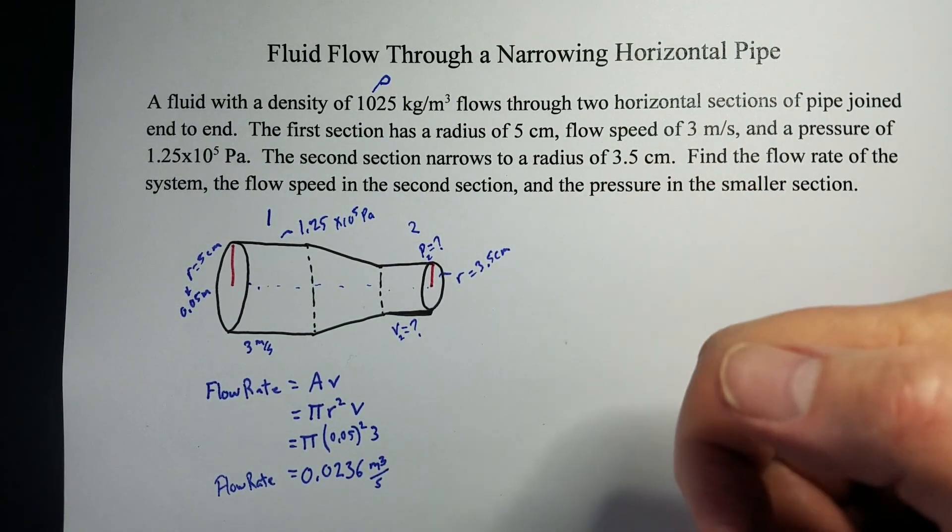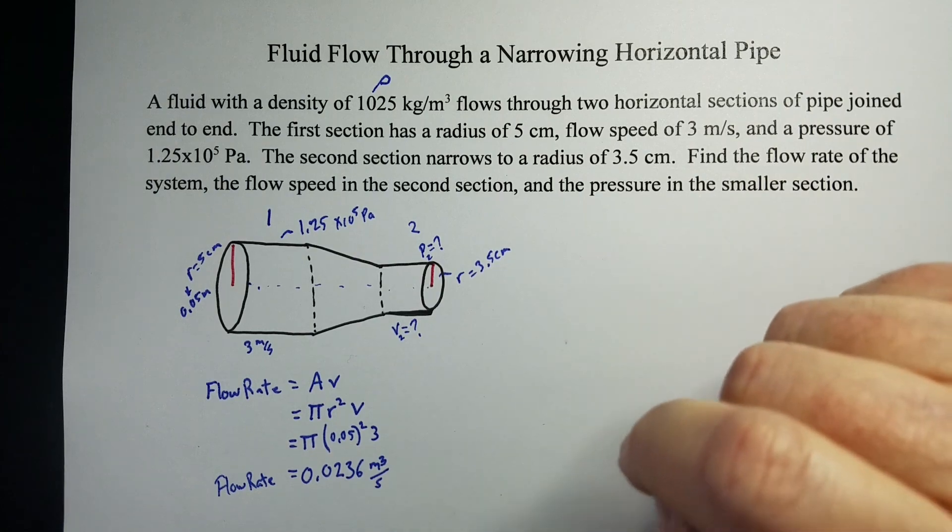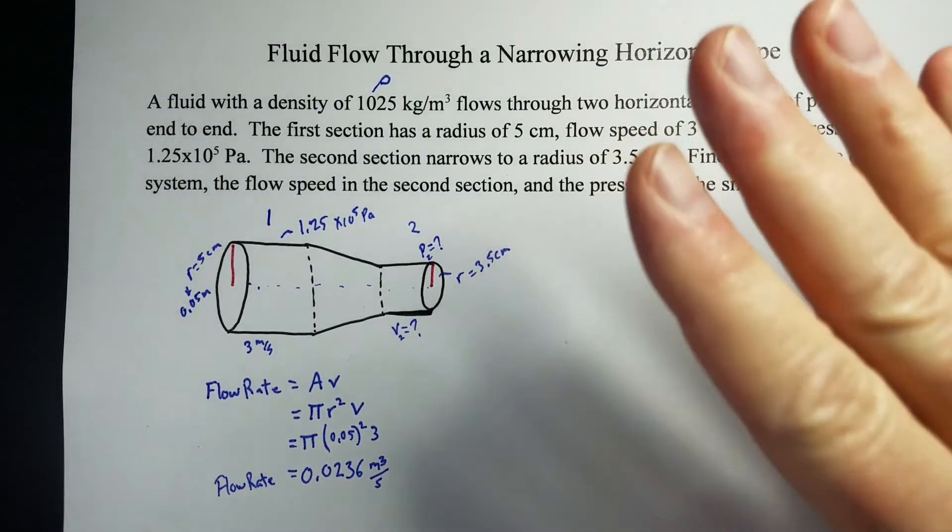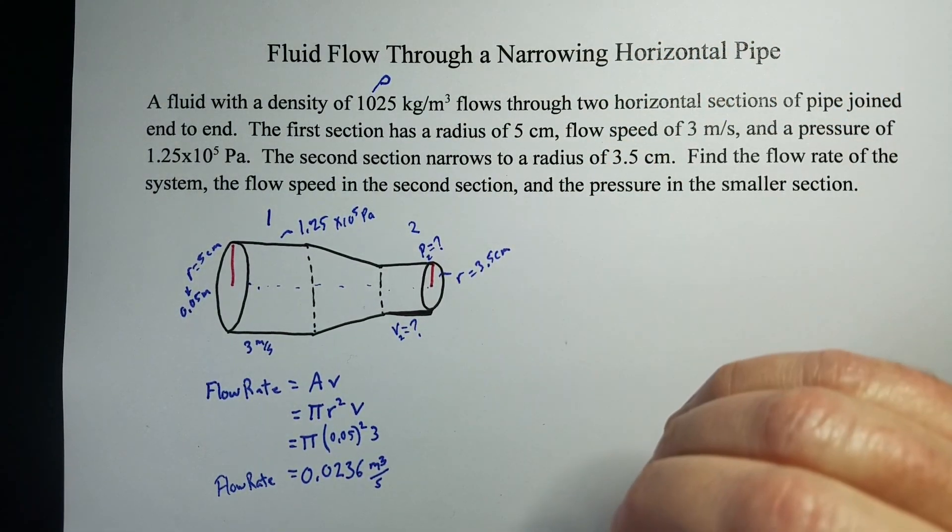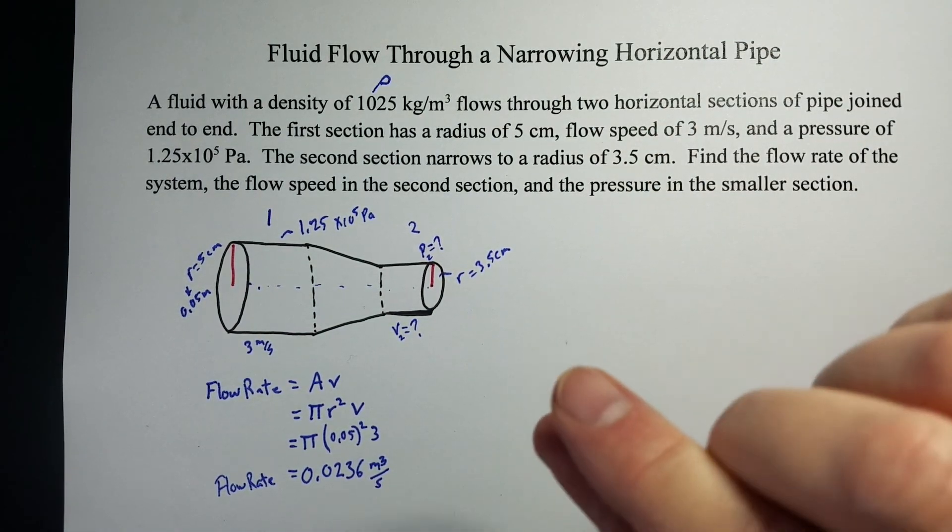So, just think about water coming out of a hose. It kind of pours out when you put your thumb over the end, it sprays out faster. But, it's the same volume of fluid, it's just traveling faster, because it's got to get that same volume through a tighter, narrower space.